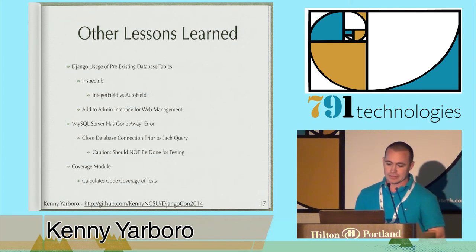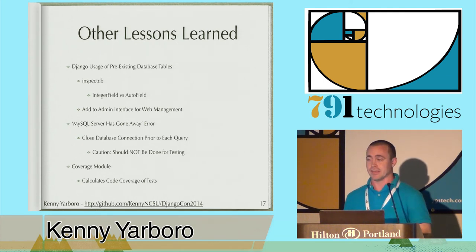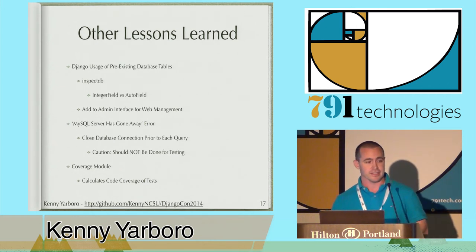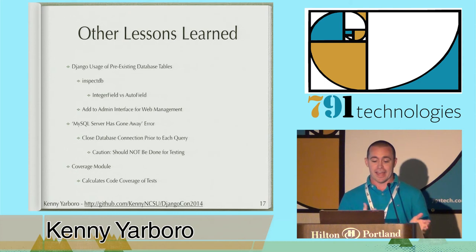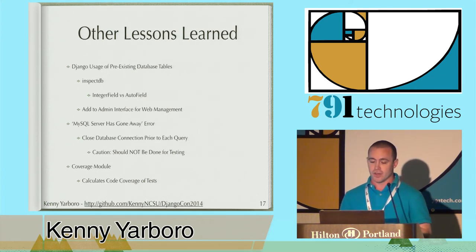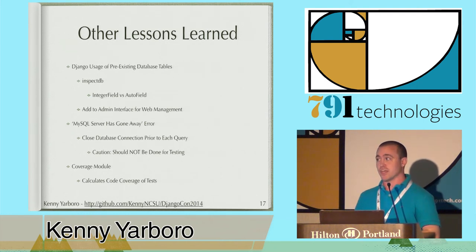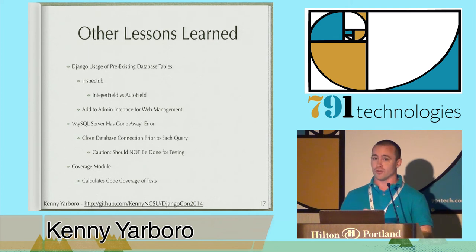Some other lessons learned: we had legacy databases, and we're running MySQL. We found we could run the inspectDB command, which takes all pre-existing database tables and generates model code. The problem was that inspectDB had made the auto-increment field an integer field in the Django model code, which meant Django did not automatically give us an ID back after saving that model. The quick fix was to change it from an IntegerField to an AutoField — then we could save that model, get the ID back, and continue our processing.